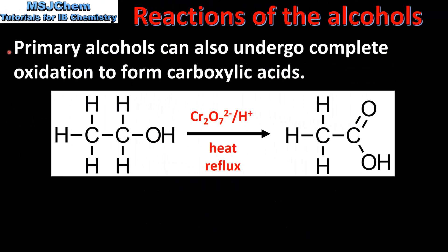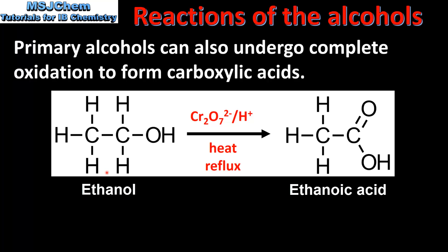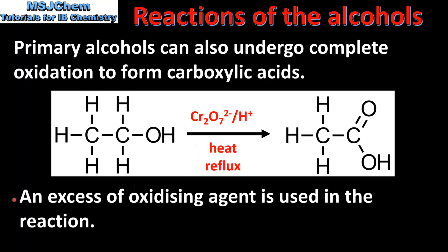Primary alcohols can also undergo complete oxidation to form carboxylic acids. Here we have the complete oxidation of a primary alcohol to produce a carboxylic acid. The oxidizing agent is acidified potassium dichromate. The reaction conditions are heat under reflux, and an excess of oxidizing agent is used in the reaction.